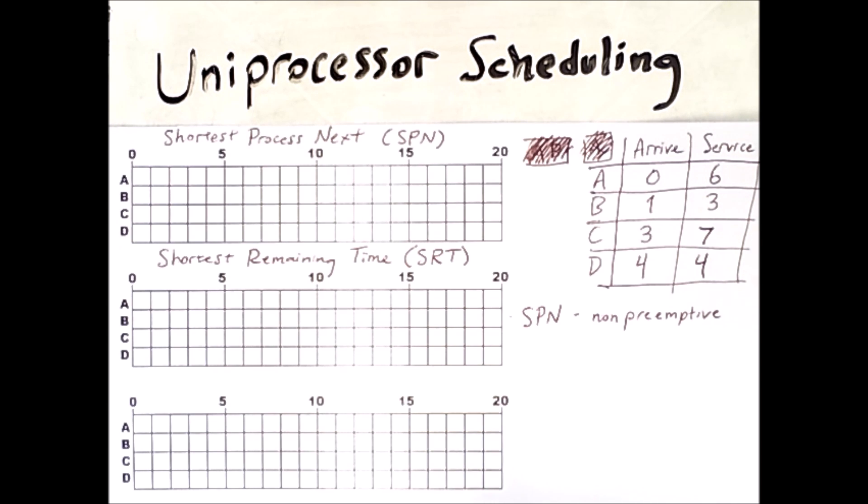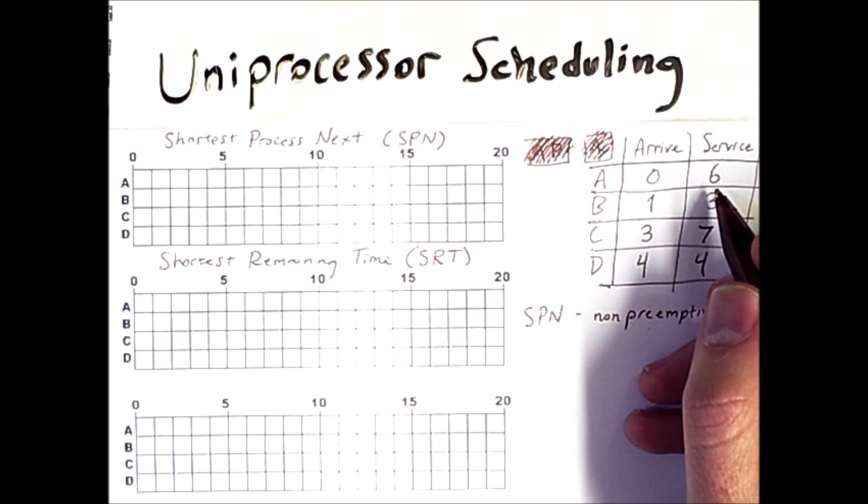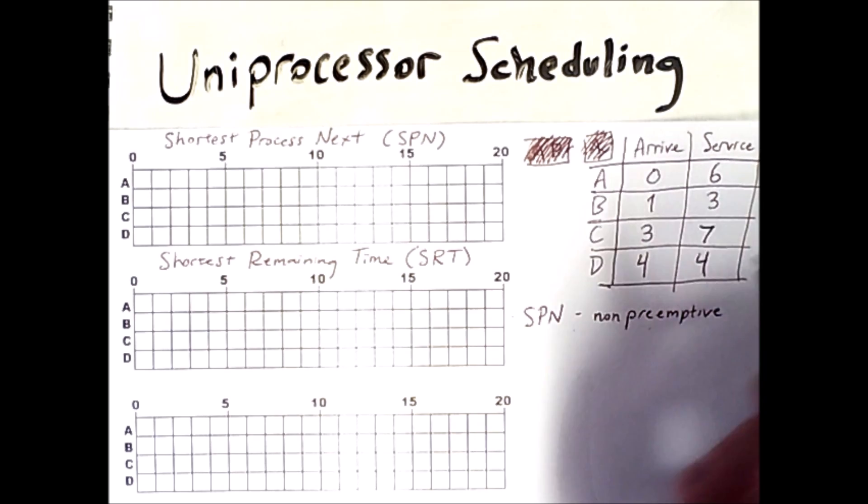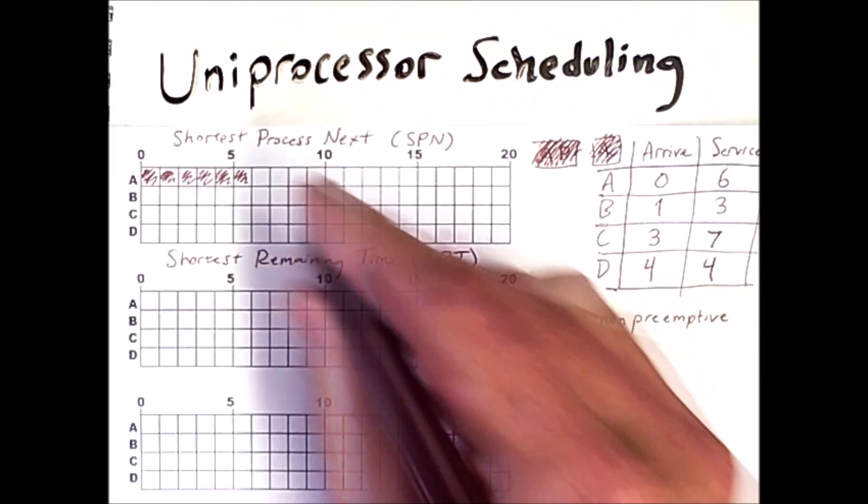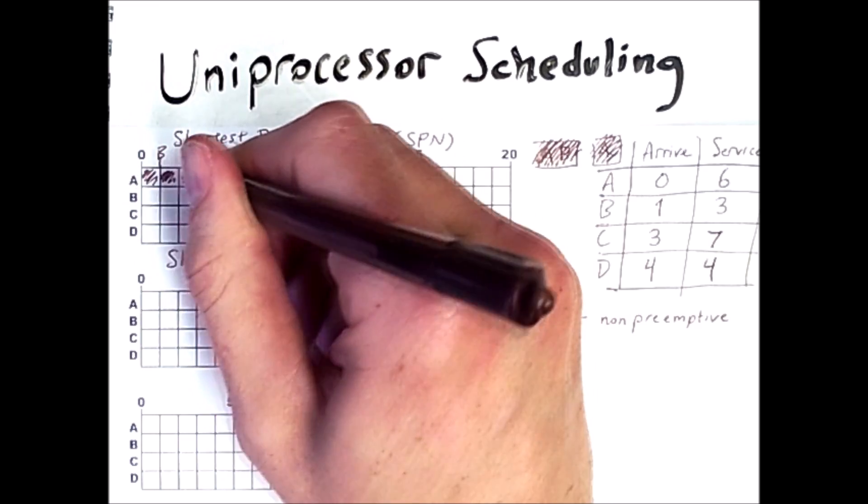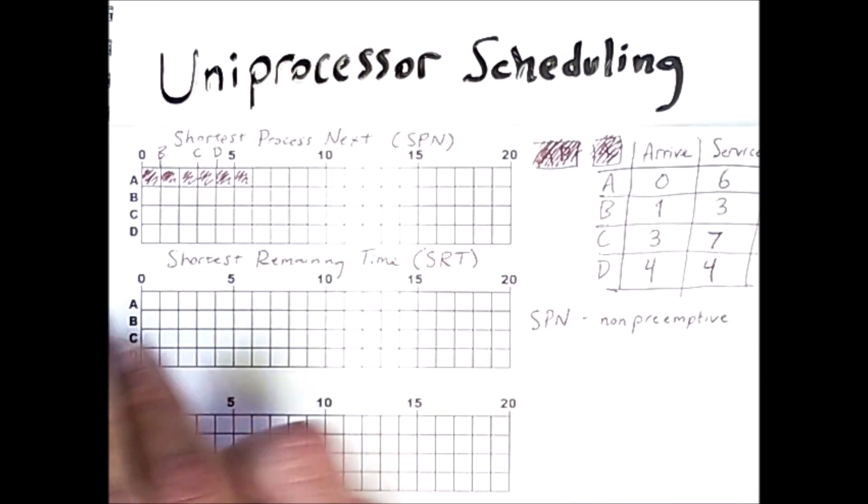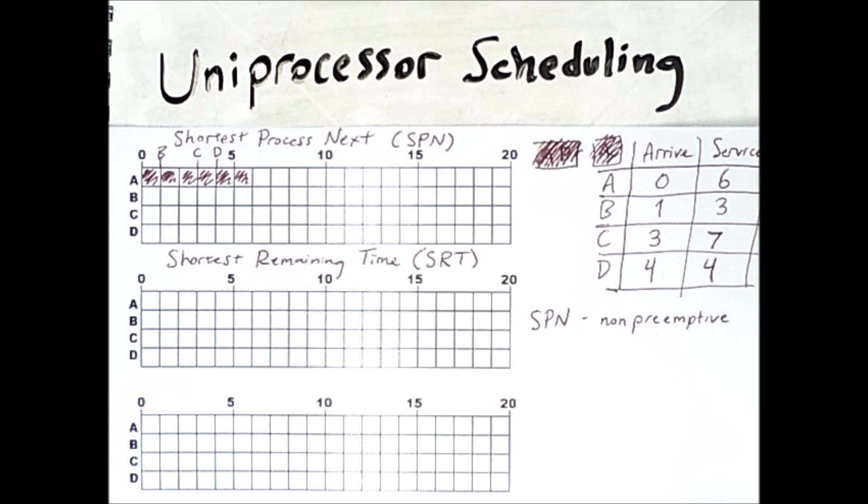So at the start, there are no processes running and only A is in the system. So process A is the one that will run for its full six time units. Now note that process B showed up here and C showed up here and D showed up here. This doesn't affect Shortest Process Next because it's non-preemptive.